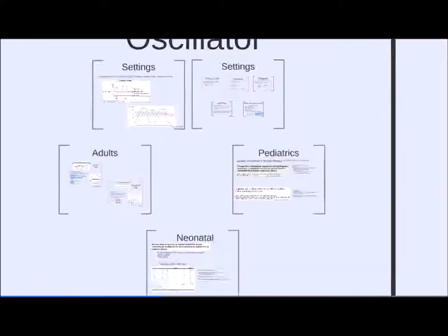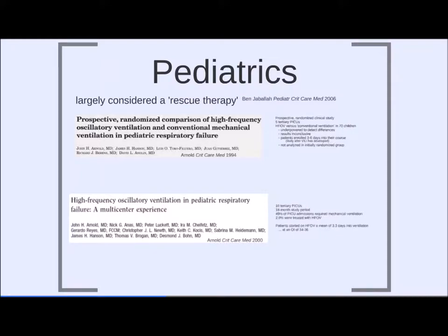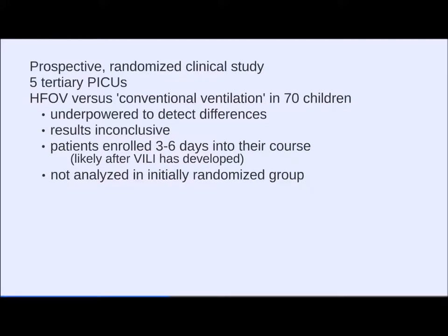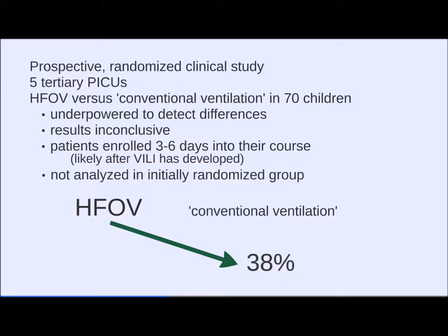In pediatrics, the oscillator is largely considered a rescue therapy. A prospective RCT in 5 tertiary PICUs compared the oscillator to conventional ventilation in 70 children, but was underpowered to detect significant differences. Results were inconclusive. Patients were enrolled 3–6 days into their course, potentially after ventilator-induced lung injury had already developed. Of those started on the oscillator, 38% were converted to conventional ventilation, and of those on conventional ventilation, 66% were transitioned to the oscillator, making comparisons extremely difficult.